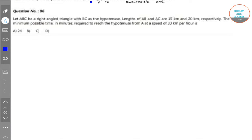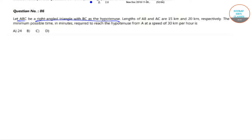The next question is: let ABC be a right angle triangle with BC as the hypotenuse. Lengths of AB and AC are 15 kilometers and 20 kilometers respectively. The minimum possible time in minutes required to reach the hypotenuse from A at a speed of 30 kilometers per hour is...